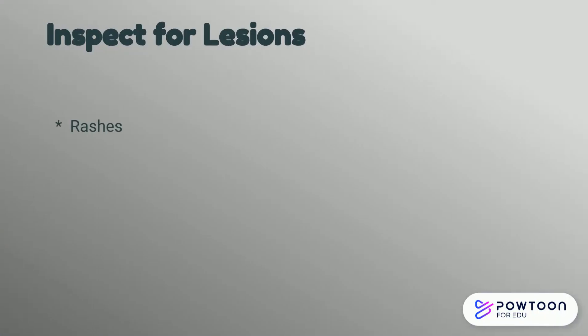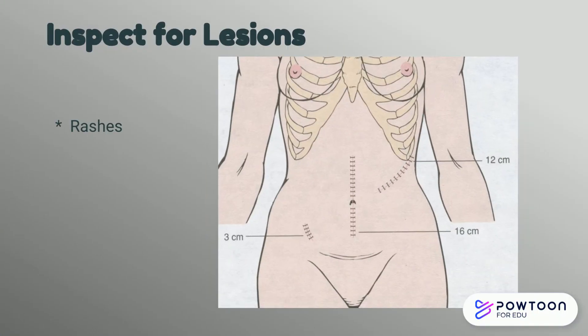Continuing on with your inspection, you'd notice any rashes, any scars, or nodules. The scars on this picture show some common scars from common surgeries, such as gallbladder, appendicitis, and others.